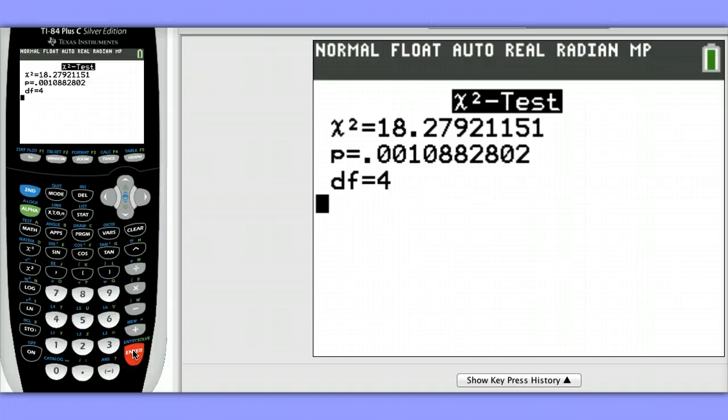Our chi-square test statistic is about 18.3, and our p-value is 0.001. This means we have a statistically significant result. So we would conclude that there is a difference in the true distributions of entrees ordered when the different types of music are being played.